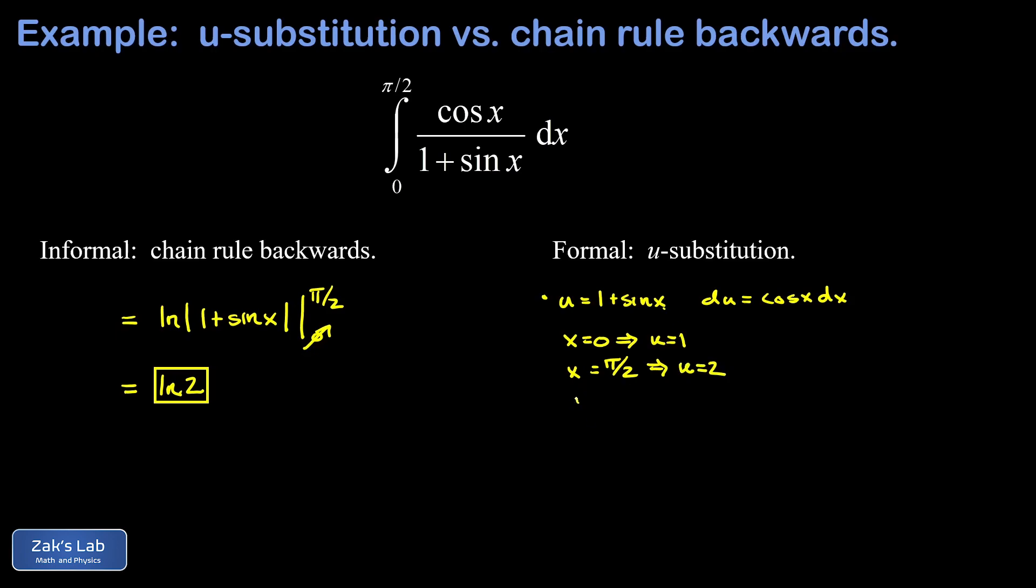All right, so now we transform the integral, and we're going to integrate from 1 to 2. And then cosine x dx is just sitting there in the numerator, so that's du. And then my denominator, I gave that the simple name u. So this is a simple 1 over u integral, which of course integrates to a natural log function. I end up with natural log absolute value of u evaluated from 1 to 2.